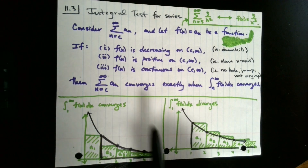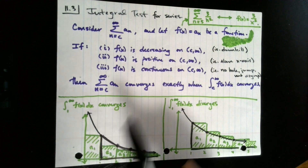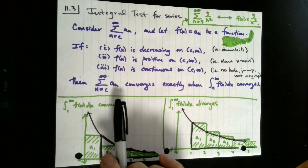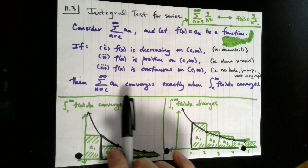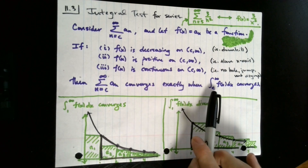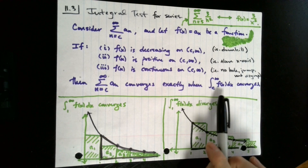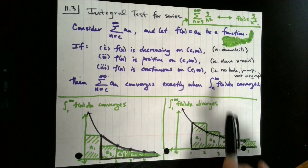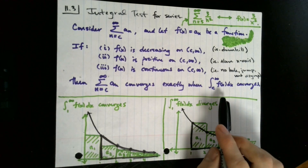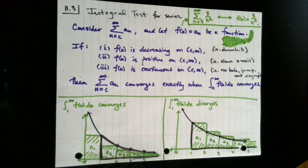Ultimately, we need a decreasing, positive, and continuous function — no holes, no jumps, no vertical asymptotes. If that is the case, we can use the integral to tell us something about the series. Specifically, the series will converge exactly when the integral converges. When the integral associated with the function — with x plugged in — converges, the series converges. And on the other hand, if the integral diverges, then the series will diverge.